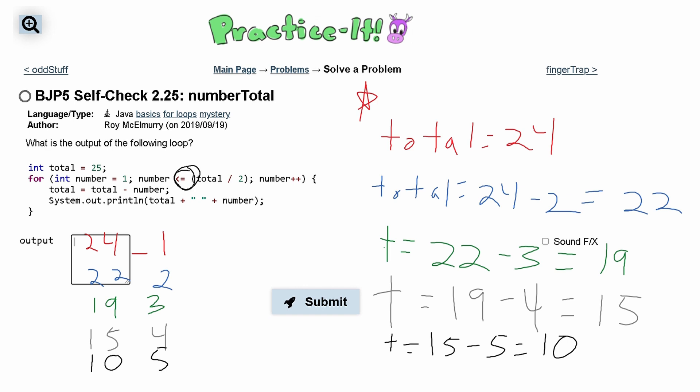which right here it says that our number has to be less than or equal to total divided by 2 to be in the loop. Since our number is greater, we are actually going to hop out of the loop. So now we've finished the loop.